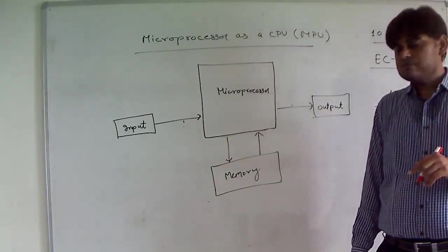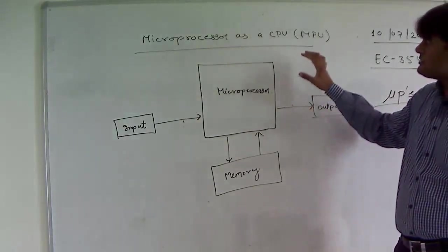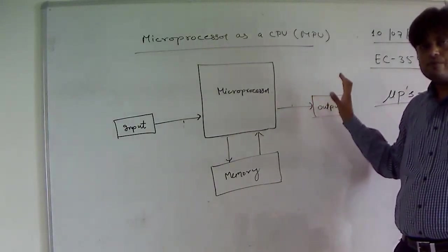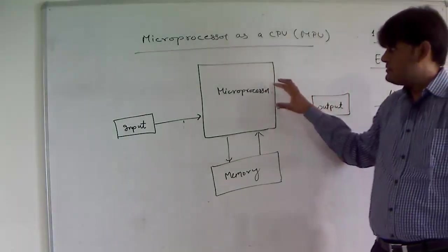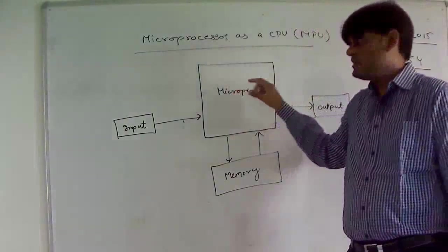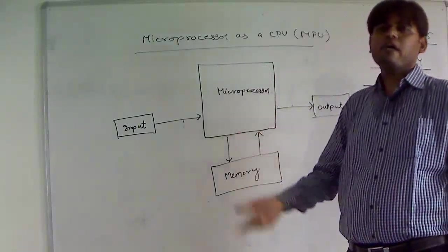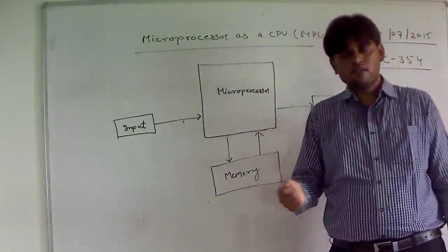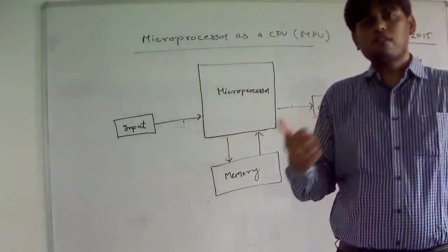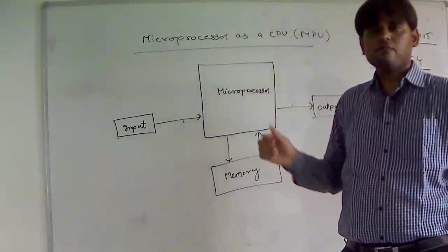The block diagram of a microprocessor as a CPU shows only two main blocks — the arithmetic and logic unit as well as the control unit. It may also have encoder/decoder circuitry for memory. So there are additional circuits inside this integrated circuit that is the microprocessor.